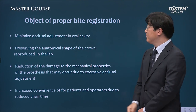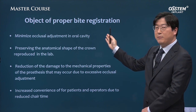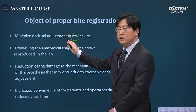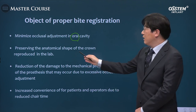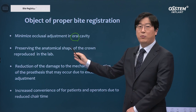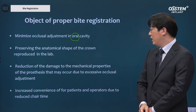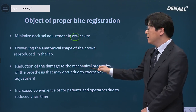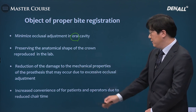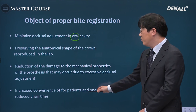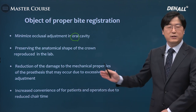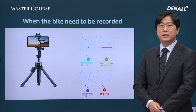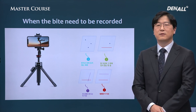The objectives of proper bite registration are: occlusal adjustments in the oral cavity should be minimized in time and effort, the anatomical crown shape should be preserved and reproduced in the lab, and it should reduce damage to the mechanical properties of the prosthesis. It should reduce chair time, increasing convenience for both patients and operators. Because of those benefits, we need to record bites appropriately.